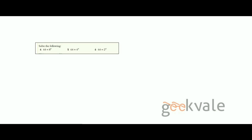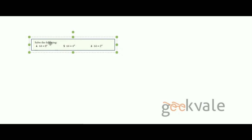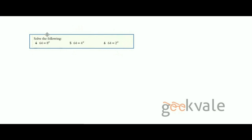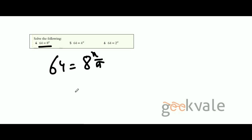These are the questions from the second row that I selected to solve on the board. The very first question: 64 equals 8 to the power of x, and we have to find x. The easy way to solve this is to represent 64 as a power of 8.